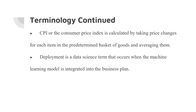CPI, or the Consumer Price Index, is a measure that examines the weighted average of prices of a basket of consumer goods and services such as transportation, food, and medical care. It is calculated by taking price changes for each item in the predetermined basket of goods and averaging them. Deployment is a data science term that occurs when the machine learning model is integrated into the business plan. Deployment is the last stage of the CRISP-DM process and occurs when all other steps, such as data preparation, data exploration, and modeling, have occurred.